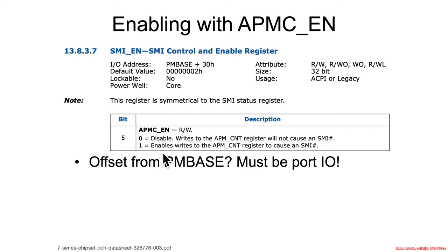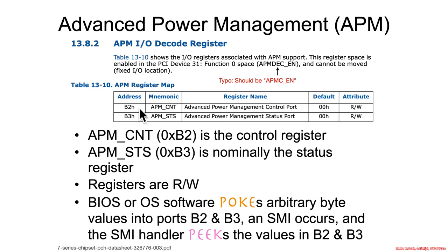If APMCN is set to 1, writes to the APMCNT register cause an SMI; if it's set to 0, they don't. APMCNT is the actual name for the B2 port. Looking through the manual and finding APMCNT: B2 is the Advanced Power Management Control Port, and B3 is the Advanced Power Management Status Port. While it's notionally a status register, as you'll see in the next slide, it's not really used that way much.